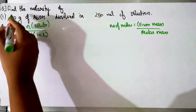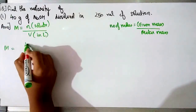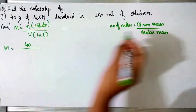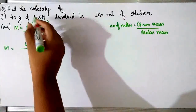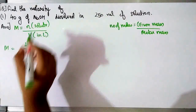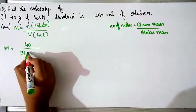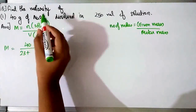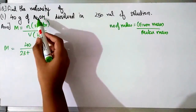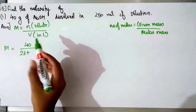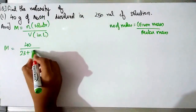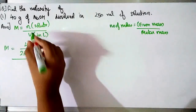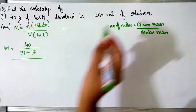The given mass is 40, upon the molar mass of NaOH. For Na it is 23, for oxygen it is 16, and for hydrogen it is 1, so 16 plus 1 is 17. That whole value is divided by the volume of solution.